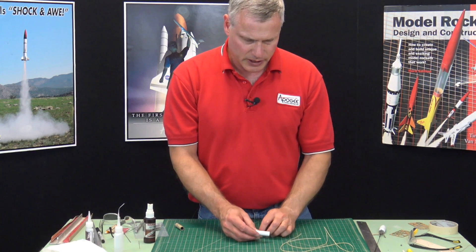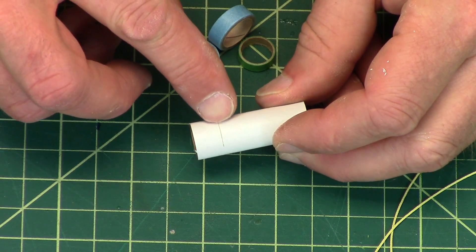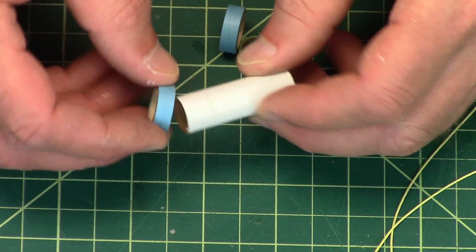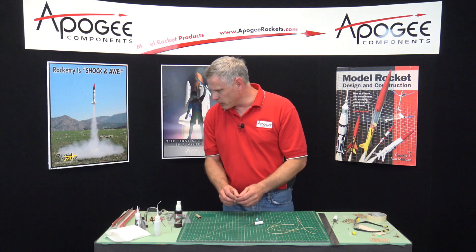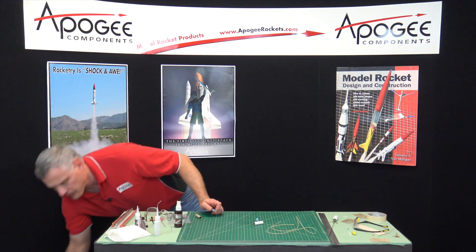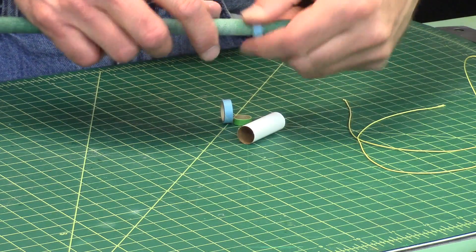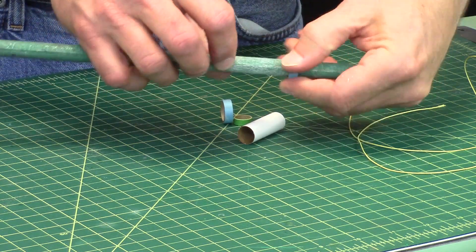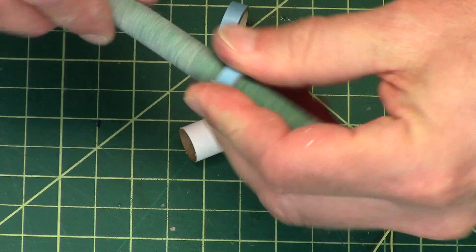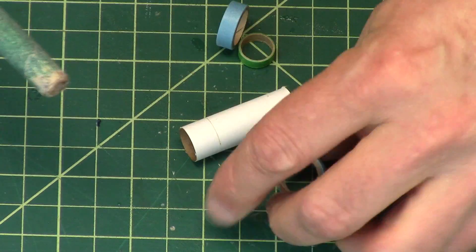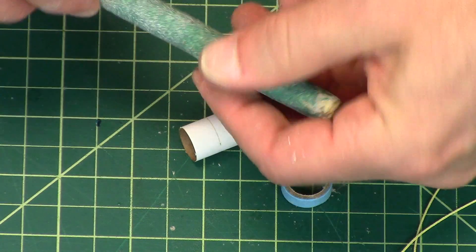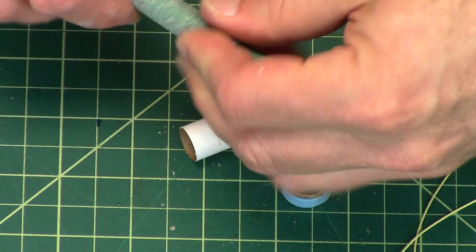Now if you look at the engine tube, it's got a little line on it and that is for the edge of the ring. Sometimes these rings have a little burr on the inside. If you take a dowel and wrap it with some sandpaper, you can take out that burr and then it will go on a lot easier.